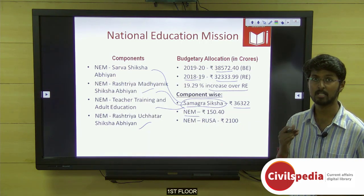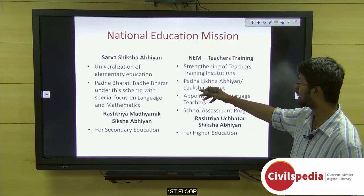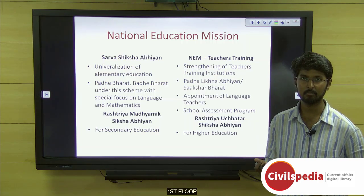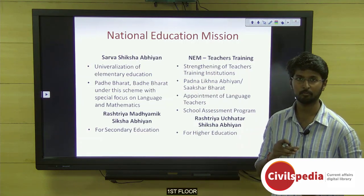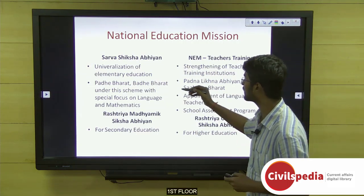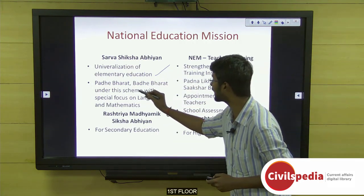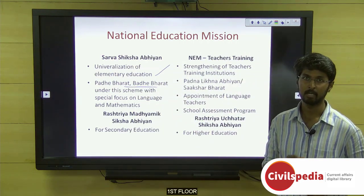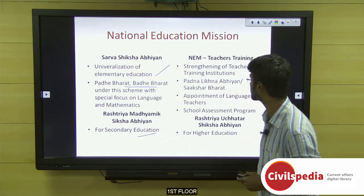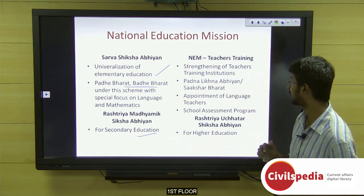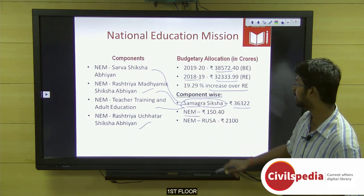This interim budget largely focused on children's education at the lower and secondary levels. Education has three levels: primary, middle, and higher secondary. Sarva Siksha Abhiyan covers primary education working towards universalization of elementary education — Padhe Bharat Badhe Bharat also comes under this scheme. Rashtriya Madhyamik Siksha Abhiyan covers secondary or middle level education. The third component was teacher training, which comes under Samagra Siksha Abhiyan.